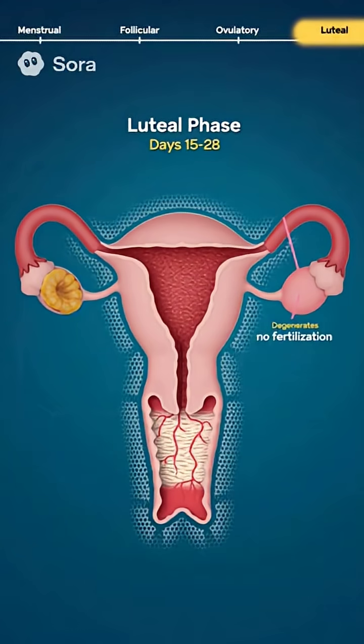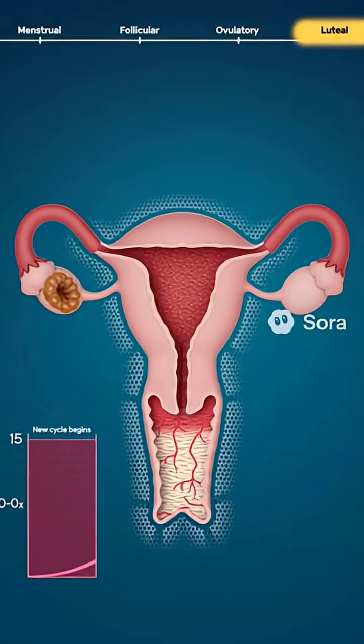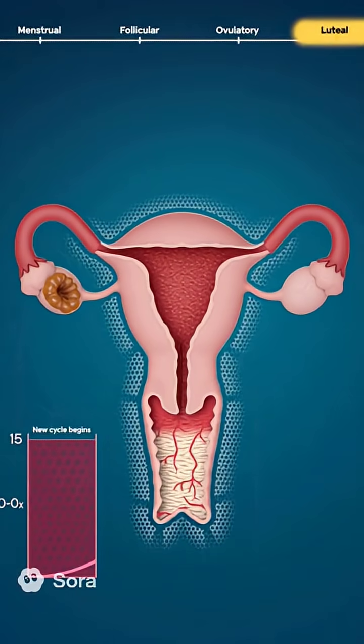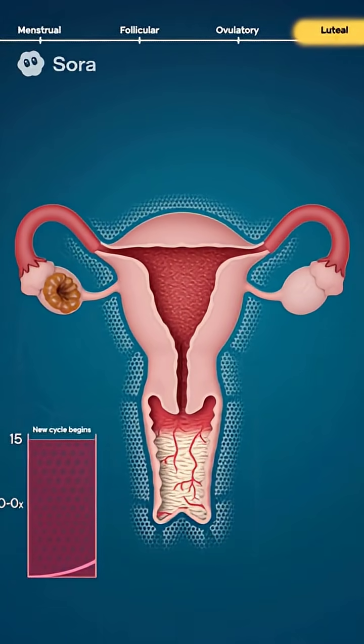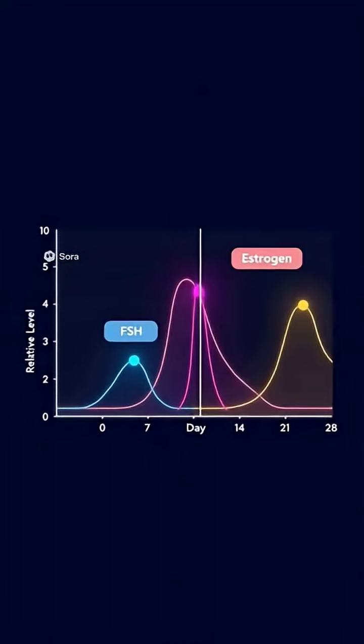Progesterone prepares the endometrium for possible implantation by thickening and stabilizing it. If fertilization does not occur, the corpus luteum degenerates.